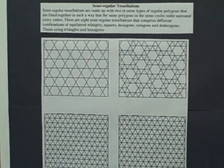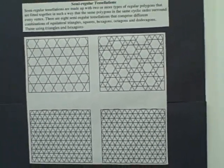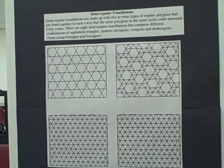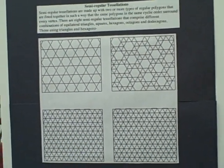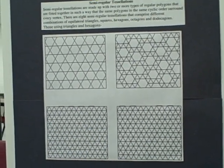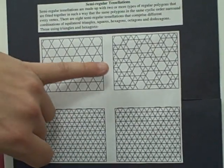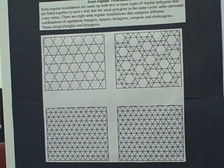In your semi-regular tessellations, these are made up with two or more types of regular polygons that are fitted together in such a way that the same polygons in the same order surround every vertex. You can see you have triangles and hexagons in there, and these are your types right there.